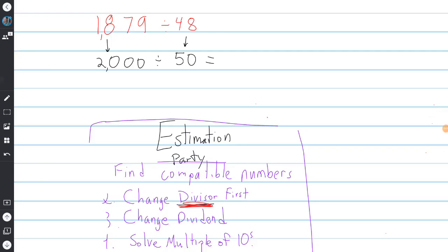This is what I came up with: change my 48 to 50, change 1,879 to 2,000. Maybe you did 1,500—not so bad, just 2,000 would be a little closer here. 5 goes into 20 four times, the zeros cancel out, the answer is 40. So 50 times 40 equals 2,000.